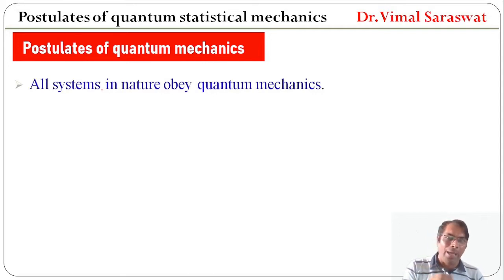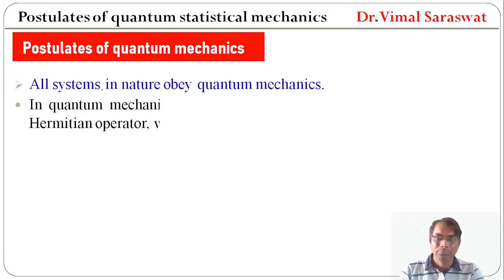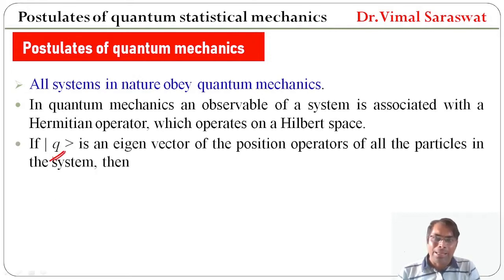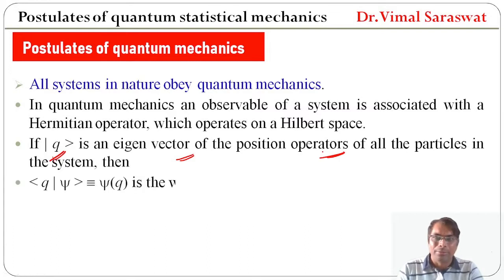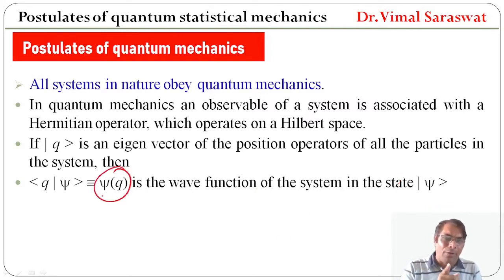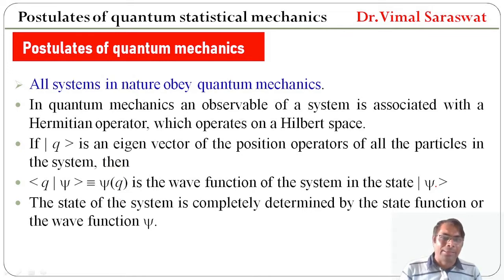All systems in nature obey quantum mechanics — that is the first postulate. In quantum mechanics, an observable of a system is associated with a Hermitian operator which operates on a Hilbert space. If |q⟩ is an eigenvector of the position operator of all the particles in the system, then ⟨q|ψ⟩ = ψ(q), where ψ(q) is the wave function of the system in the state |ψ⟩. The state of the system is completely determined by the state function or the wave function ψ.